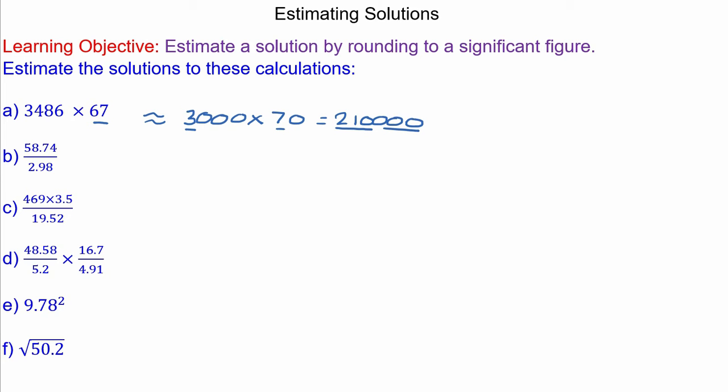Question B: this should be approximately 58.74 to one significant figure, which is going to be 60, divided by 2.98, which will make 3. 60 divided by 3 would be 20.